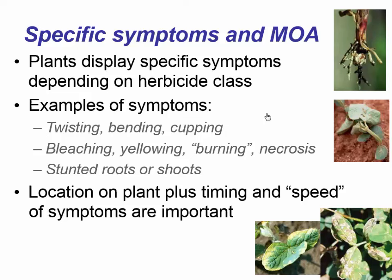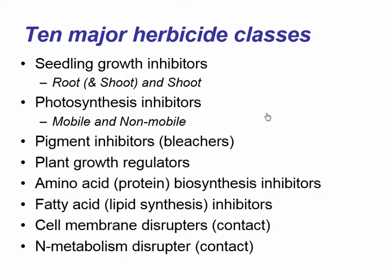Another helpful identifying factor is the speed at which injury occurs — some herbicides are very rapid, some much slower. There are roughly 10 major herbicide classes: seedling growth inhibitors, photosynthetic inhibitors, pigment inhibitors or bleachers, plant growth regulators, protein synthesis inhibitors, fatty acid inhibitors, cell membrane disruptors, and nitrogen metabolism disruptors. These classes often have very distinctive symptoms to identify them, though distinguishing individual products within those classes can be very challenging.